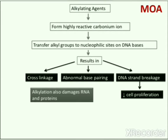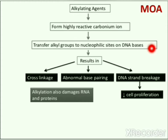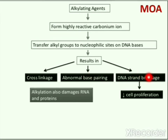Now we will elaborate this mechanism. Alkylating agents form highly reactive carbonium ions. These carbonium ions transfer alkyl groups to nucleophilic sites on DNA bases, which results in cross-linking, abnormal base pairing, and DNA strand breaks. DNA strand breaks cause decreased cell proliferation, which represents a reduction in the expansion rate of a cell population by cell division. Alkylation also damages RNA and proteins.